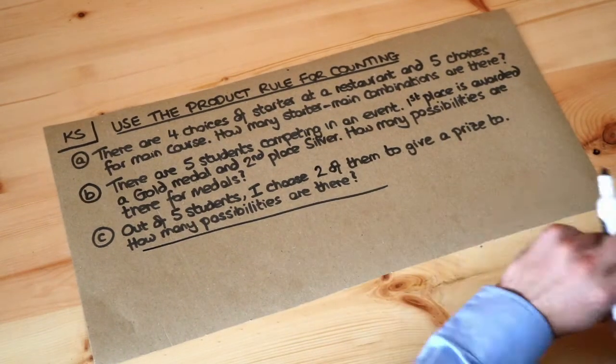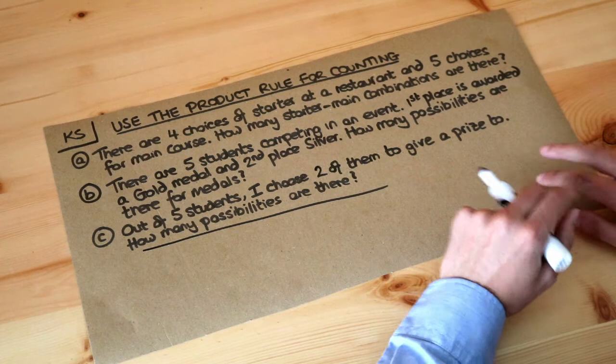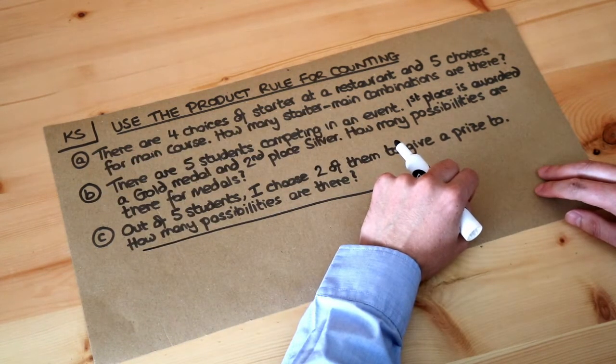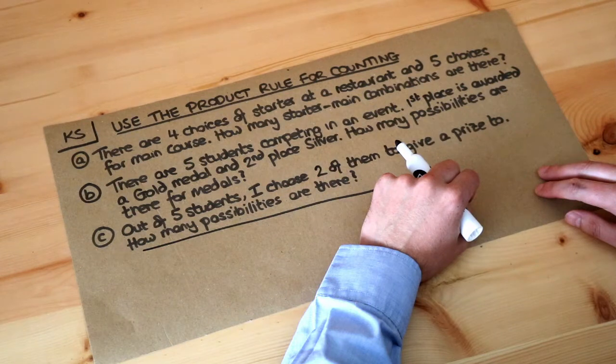Now sometimes we want to work out the total number of combinations of things. So for example in question A there are four choices of starter at a restaurant and five choices for main course. How many starter main combinations are there?